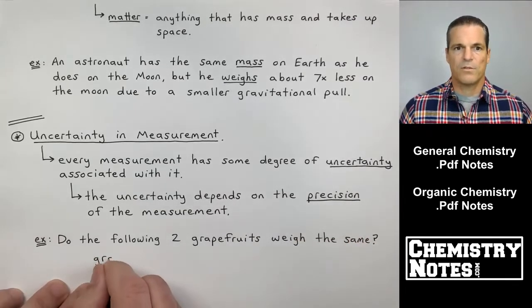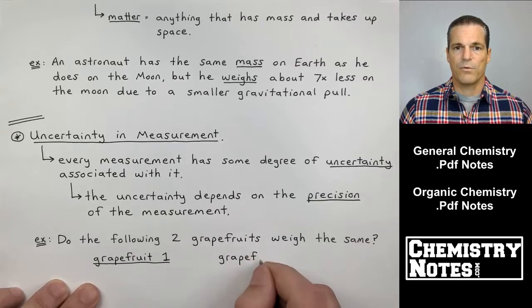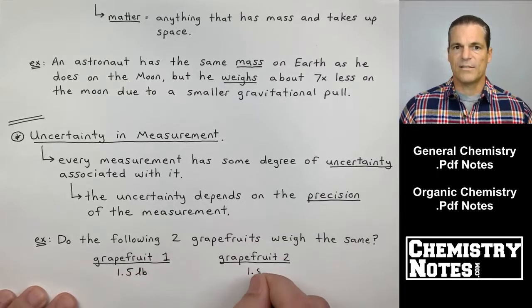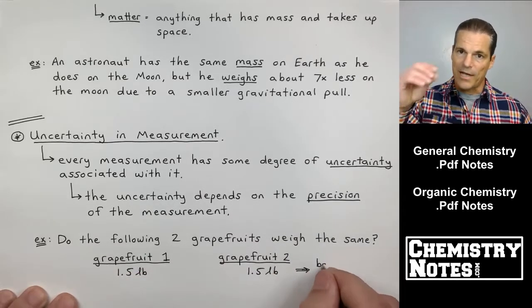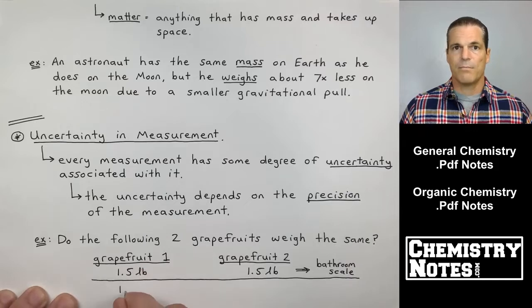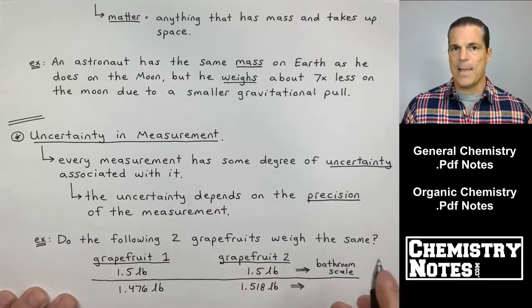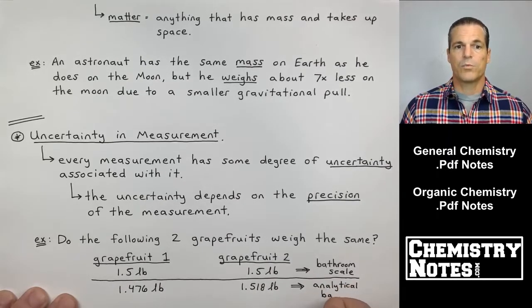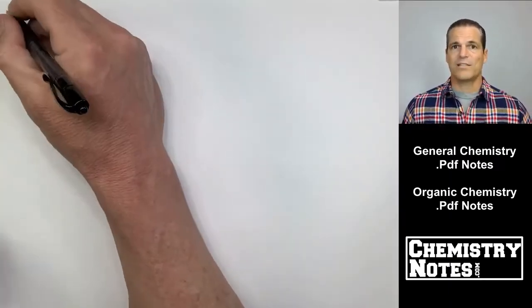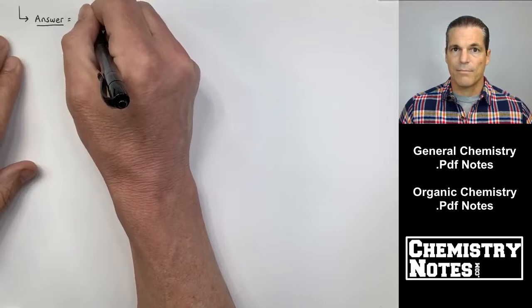As an example, do the following two grapefruits weigh the same? I have grapefruit one on the left, I got grapefruit two on the right. Well, in one instance, if I'm using, say, a bathroom scale and I plop both grapefruits on the bathroom scale individually, they both weighed 1.5 pounds. They weigh the same. Now, what if I'm using a much more elite measuring instrument such as an analytical balance? Well, grapefruit one weighs 1.476 and the other guy weighs slightly over 1.5 pounds. Now, they don't weigh the same. They weigh different.